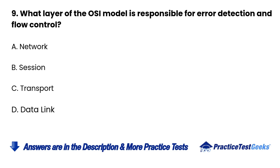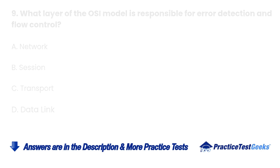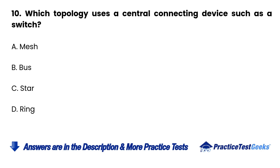Question 9: What layer of the OSI model is responsible for error detection and flow control? A. Network. B. Session. C. Transport. D. Data Link.